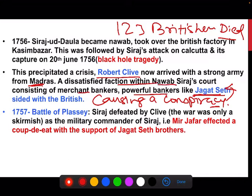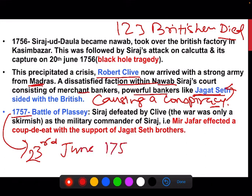Among the dissatisfied factions was Mir Jafar, the military commander of Siraj ud-Daulah, who had his own aspiration to become Nawab. The British approached him and gave him assurance that after the defeat of Siraj ud-Daulah they would make him Nawab. On 23rd June 1757 the Battle of Plassey happened. The British attacked Siraj ud-Daulah, but Mir Jafar, his military commander, fought only for namesake from Siraj's side.